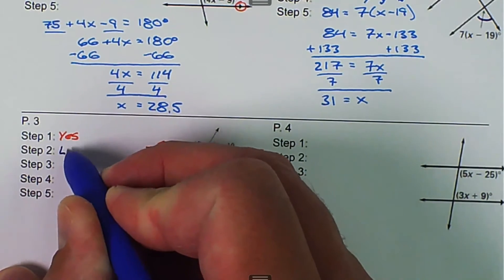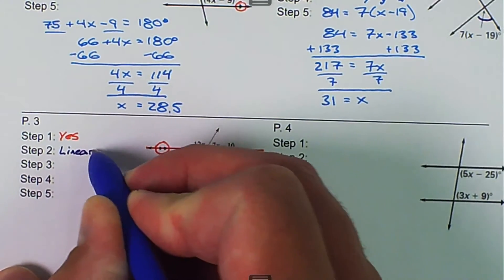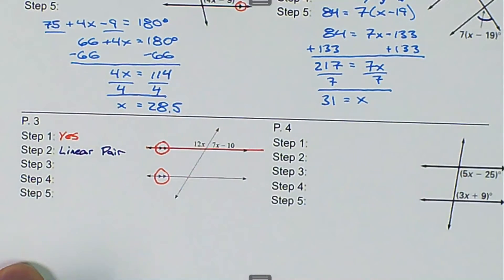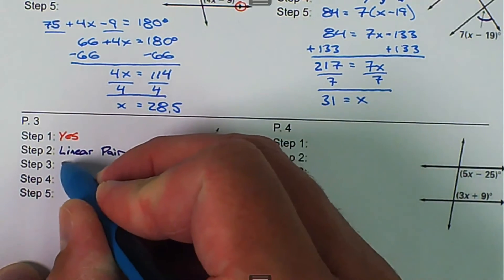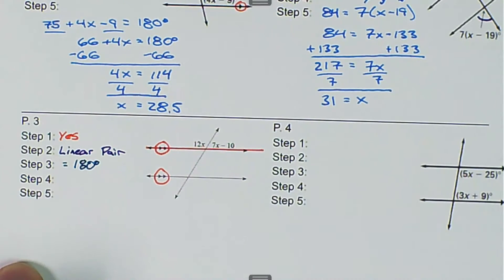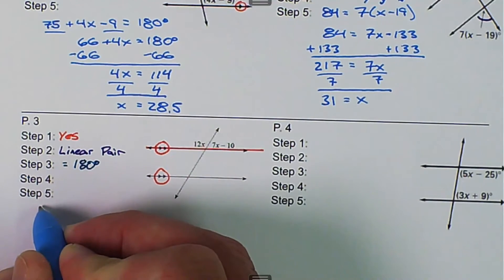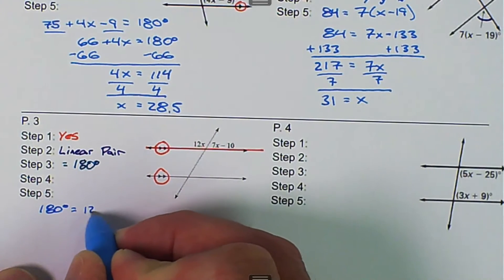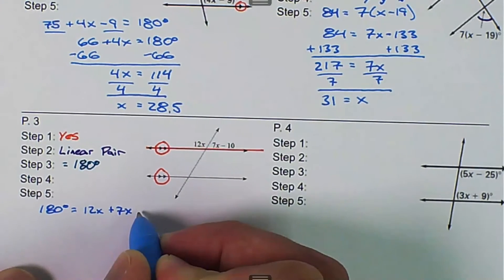So I'll write linear pair for the angle relationship. And then next, we have to decide what does that relationship mean, and that means that they are equal to 180 degrees. So we can set up the equation and then solve it, and in this case, we'll say 180 degrees is equal to 12x plus 7x minus 10.